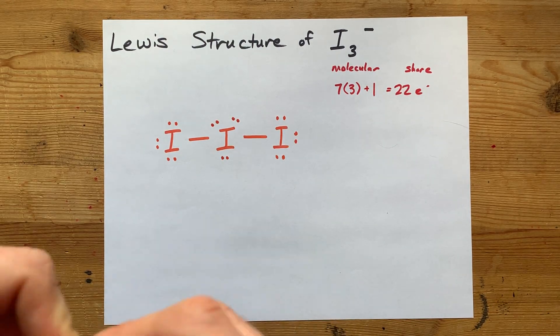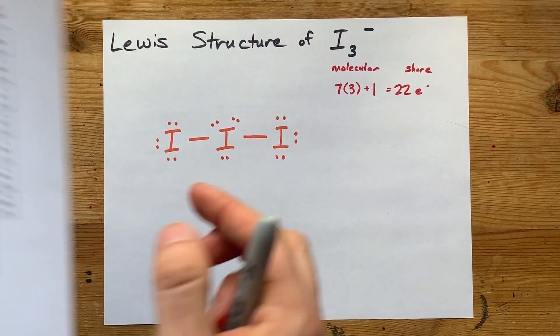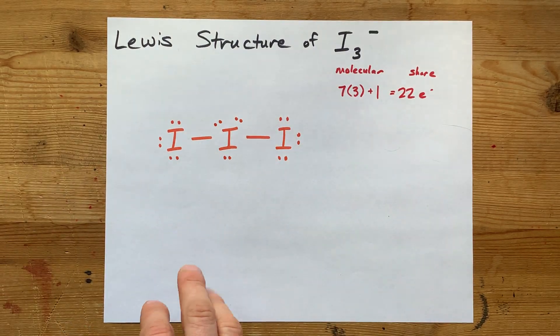The octet rule is the fact that nonmetals like to have eight electrons in their outer shell. But basically, anything from phosphorus and on can accommodate more than eight in its valence shell. That's called an expanded octet, and it's technically an exception to the rule, but not an exception on the low side—it's on the high side. So the fact that this iodine has two, four, six, eight, ten electrons around it is totally fine. It's definitely deep enough in the periodic table that it could have an expanded octet.